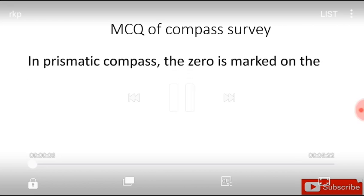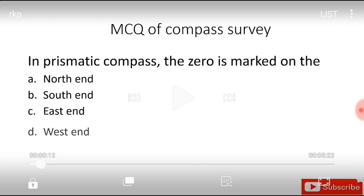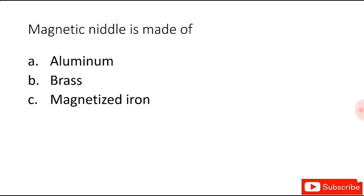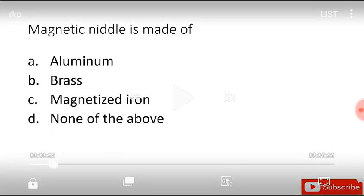The questions go like this: In a prismatic compass, the jewel is marked on the north in southern, eastern, and western, and the right answer is south. The magnetic needle is made of aluminum, brass, magnetized iron, or none of the above, and the answer is magnetized iron.